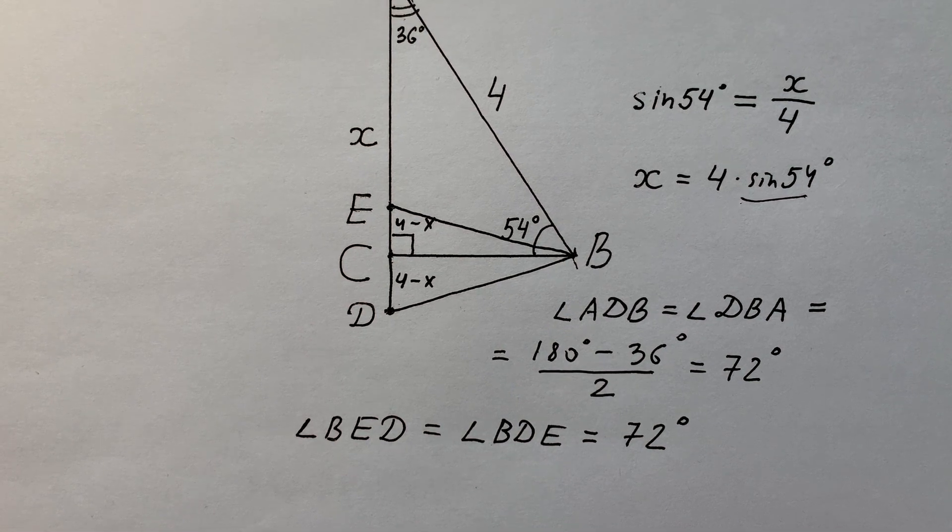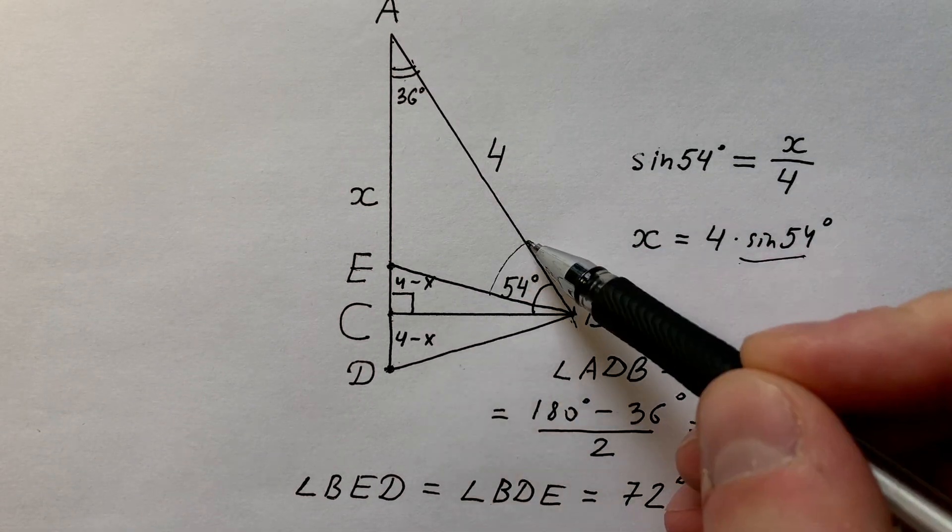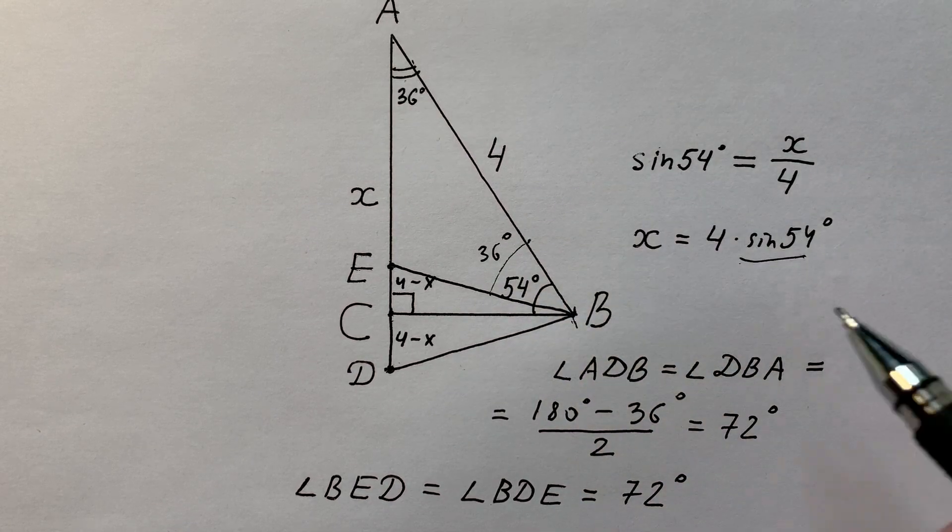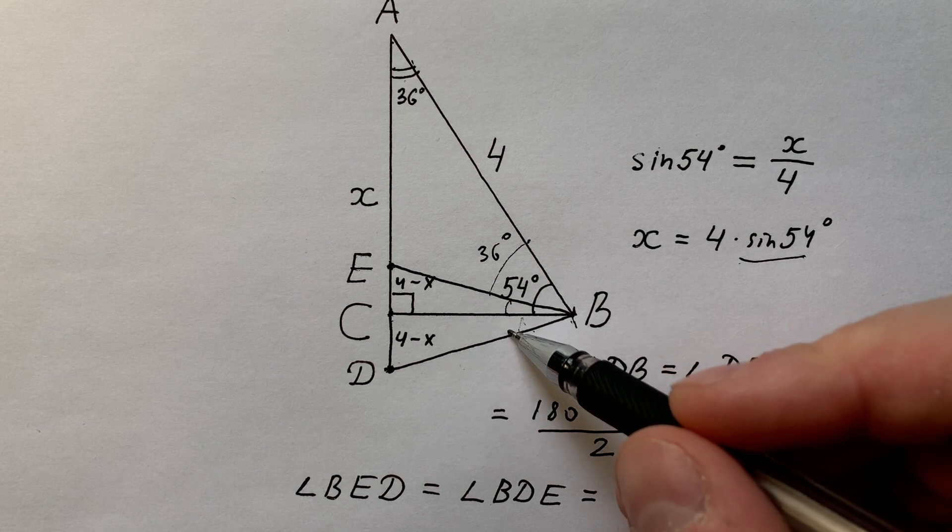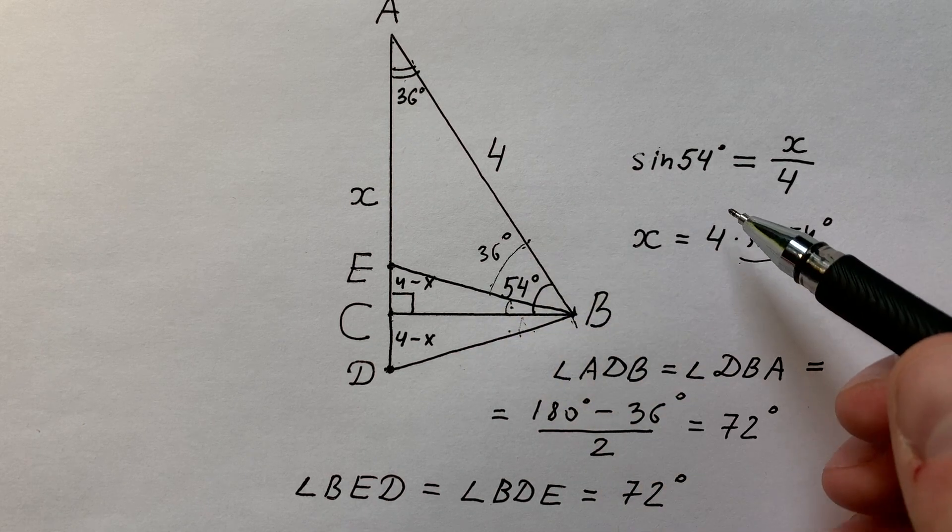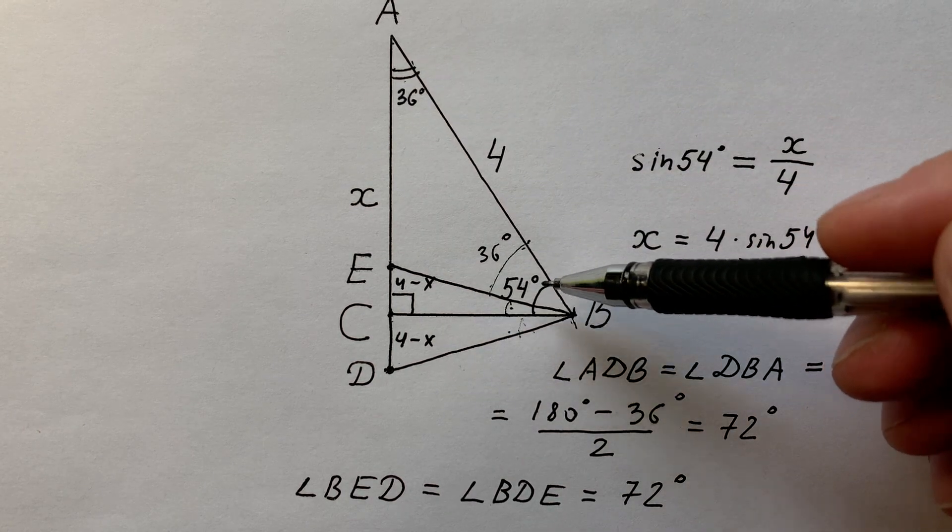Now let's admit that angle ABE equals 36 degrees, because these two angles are equal to 18 and 54 minus 18 equals 36. This means that triangle AEB is also equilateral.